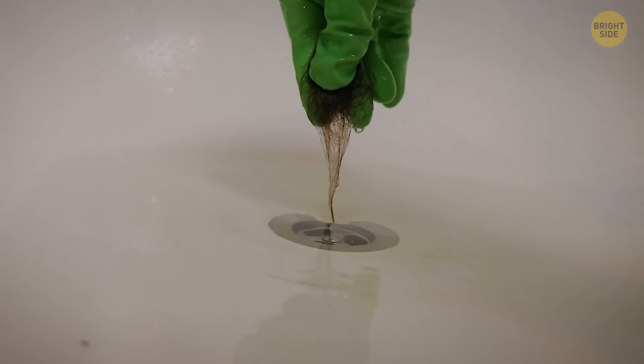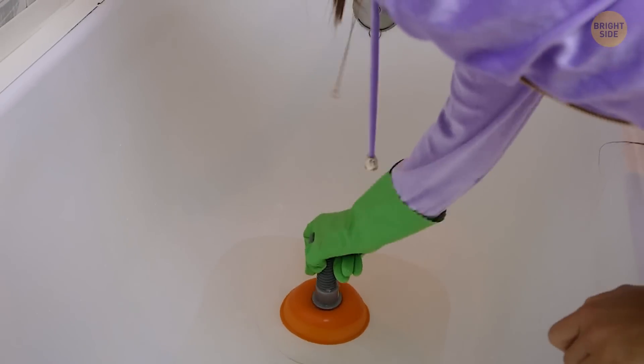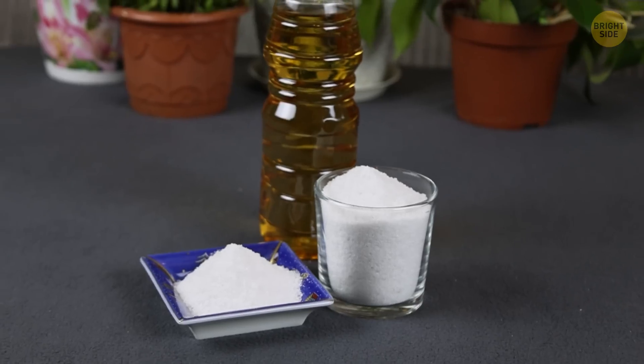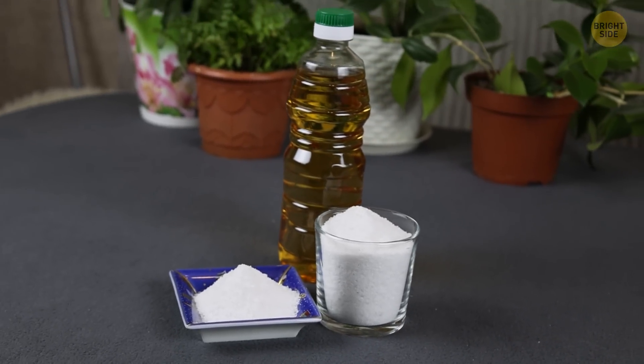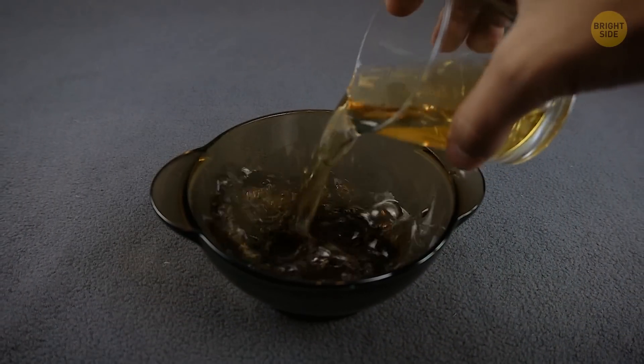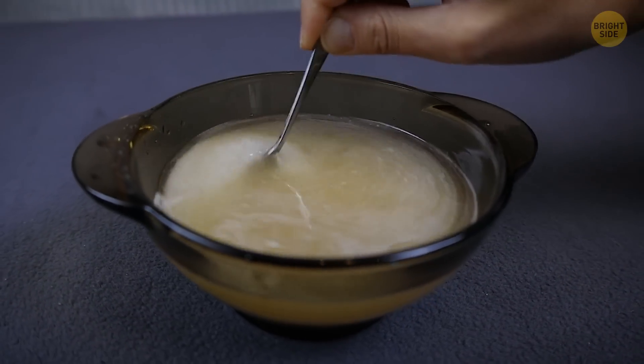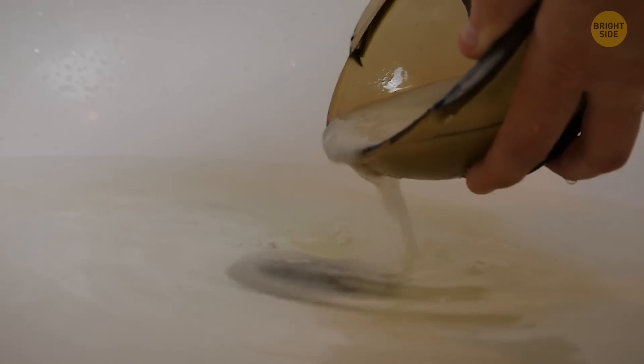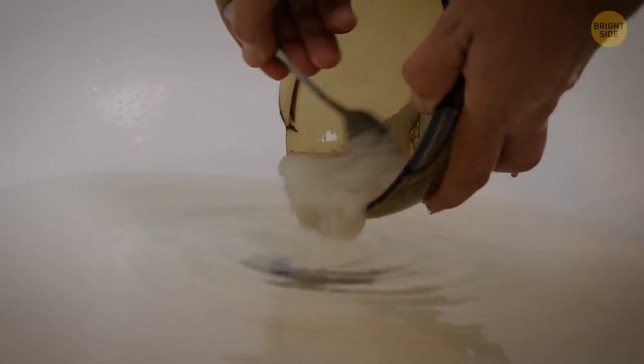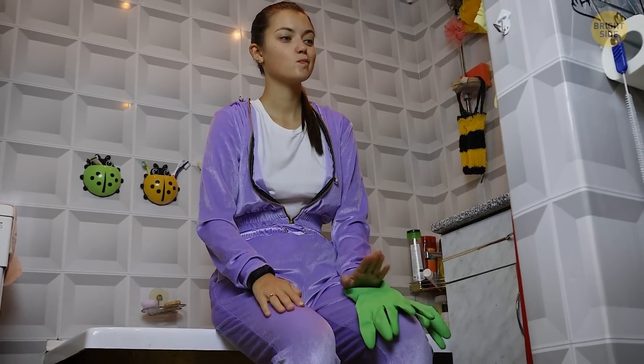Hair grease and grime build up over time and eventually clog the drains. Removing the blockage is easy with salt and vinegar. Using a small bowl, add one cup of vinegar and one cup of salt and mix thoroughly until it's evenly combined. Pour the mixture into the drain and wait for 15 to 30 minutes, depending on the severity of the clog.